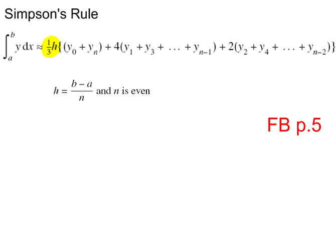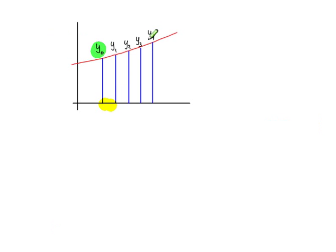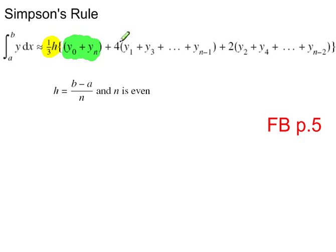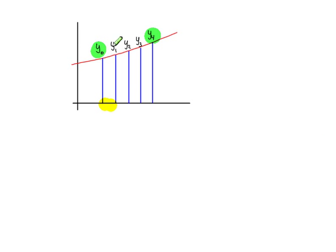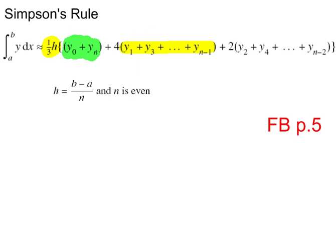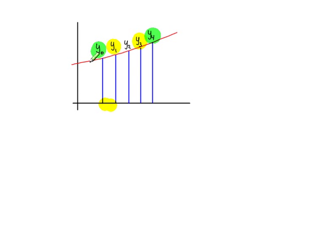And then, in brackets, you add the first and the last y values together, plus four times—and this is the sum of all the odd ordinates—so in this case it would be y1, y3, plus two times the sum of the even ordinates.